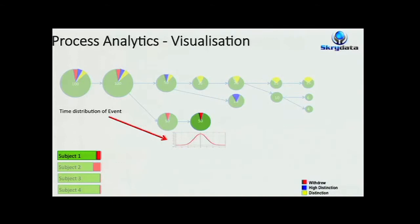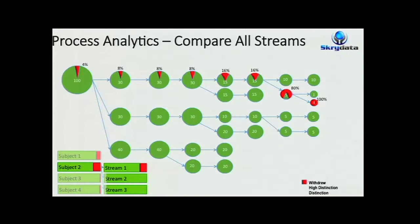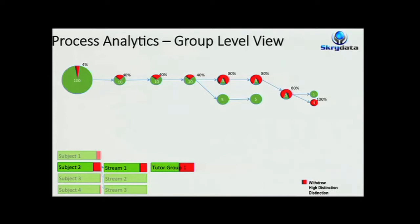We can look at a different subject, and there might be different streams — different streams might be taught on different campuses, for instance. We might be interested in knowing who withdrew. This will actually show you that in this case it was only the people in a particular path who actually withdrew. Then we can drill down further — within a particular campus, you can drill down to a particular tutorial group and go: four out of five actually withdrew in that group. Why is that? Now we can go back and take a look at what's actually going on in that particular group. So that's the visualisation side of it.